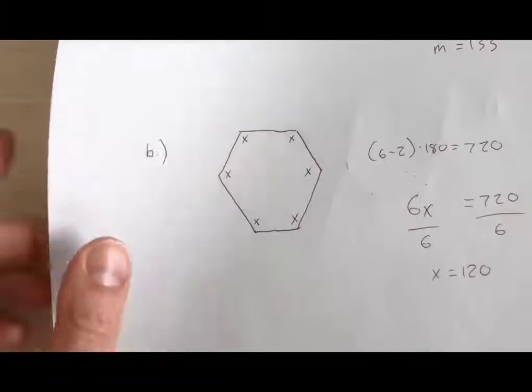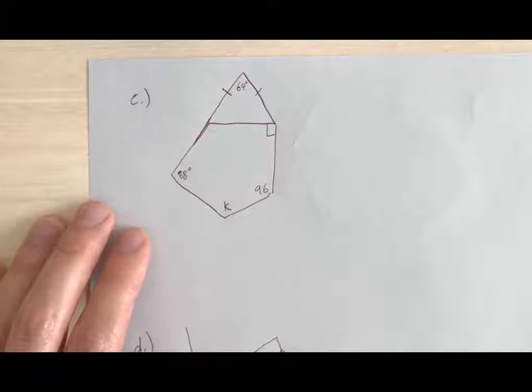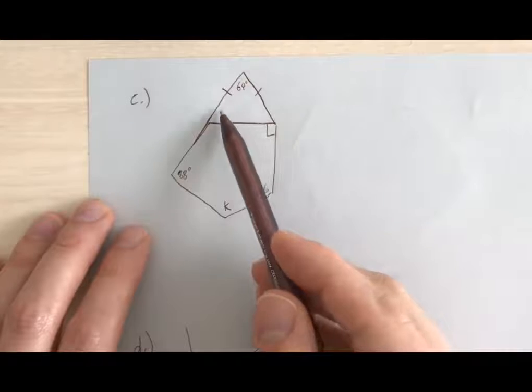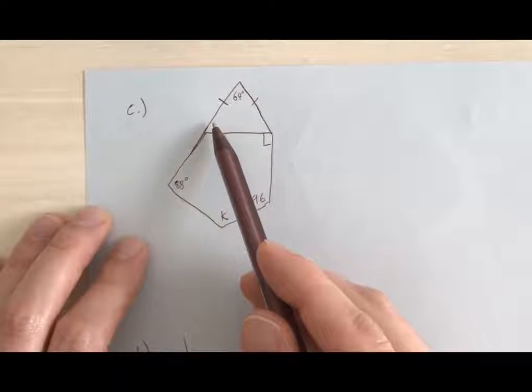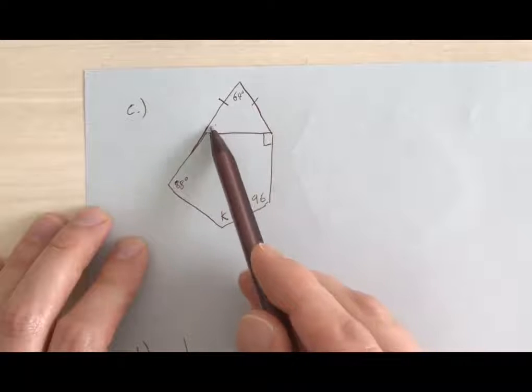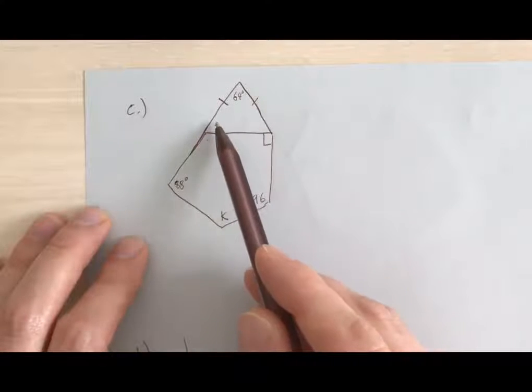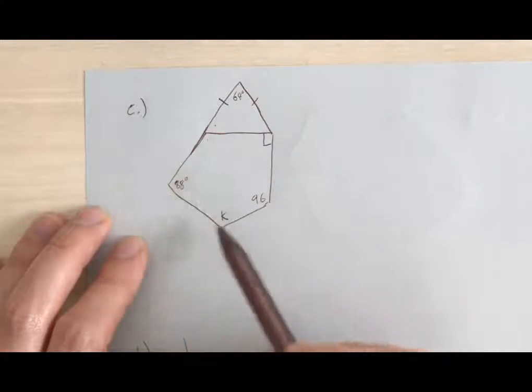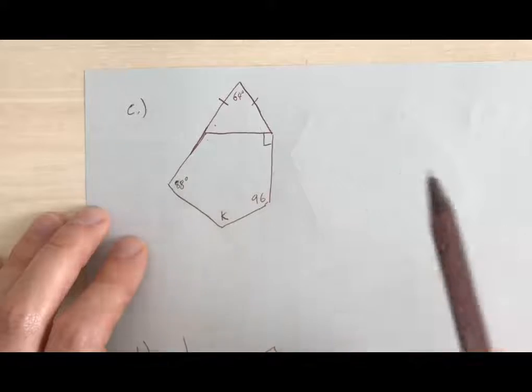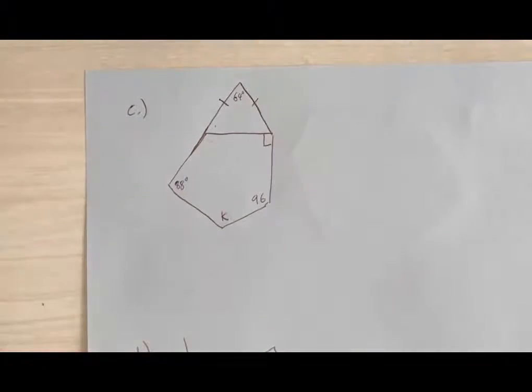All right, now on to C. So in order to do this problem, I'm going to give you a quick hint. This is an isosceles triangle up here at the top. Because it's an isosceles, these two angles are the same. You're going to want to figure out what these two angles are first, so that this angle, if you know it, you can get this angle. And then you should be able to figure out what k is.